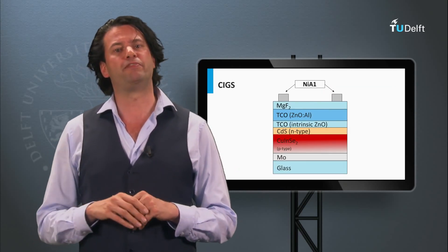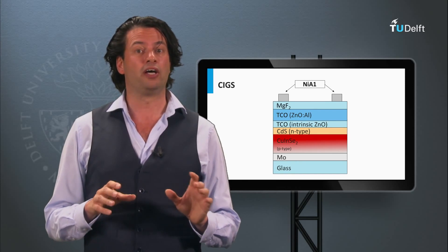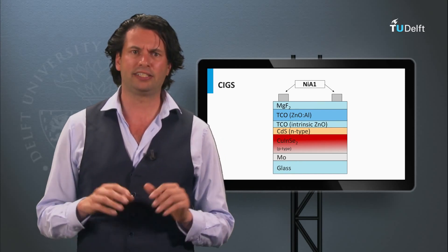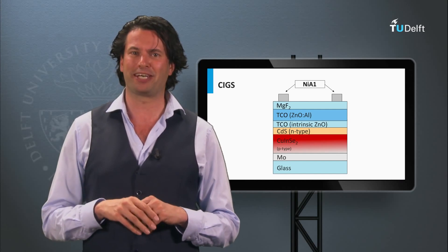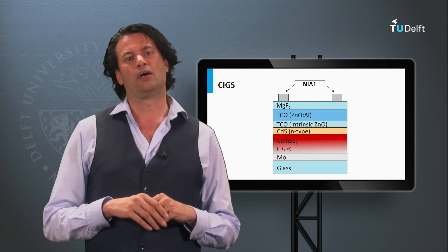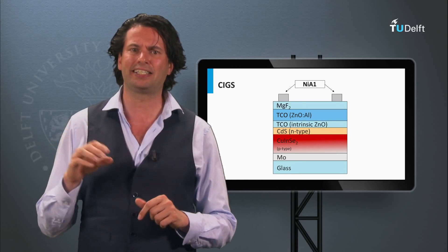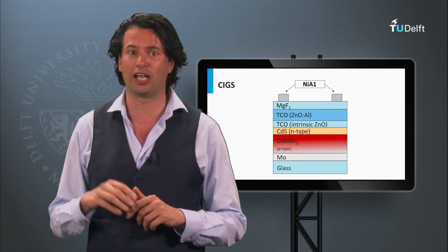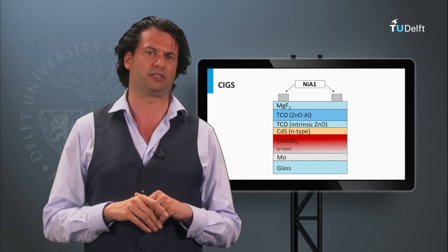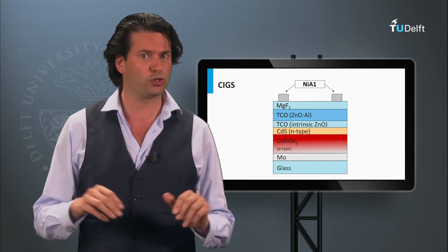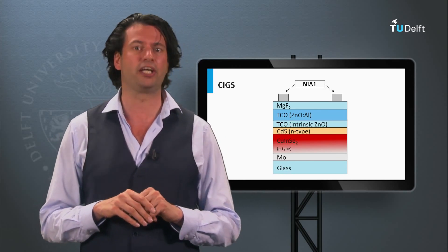Another thin film PV technology based on a chalcogenide alloy is CIGS, which stands for copper-indium-gallium-selenide. Among the thin film PV technologies it has the highest demonstrated conversion efficiency on lab scale, just above 20%. It belongs to the second generation PV technology as well.